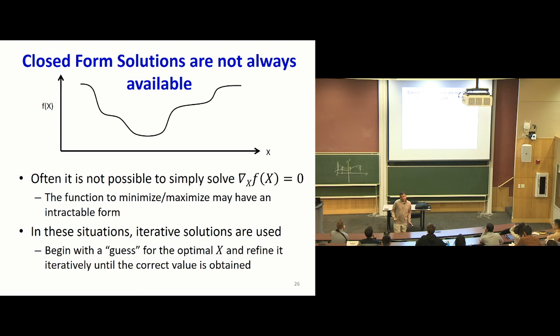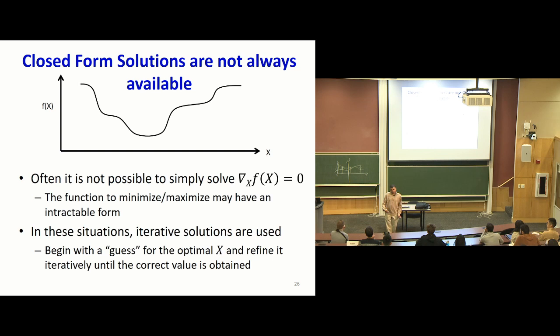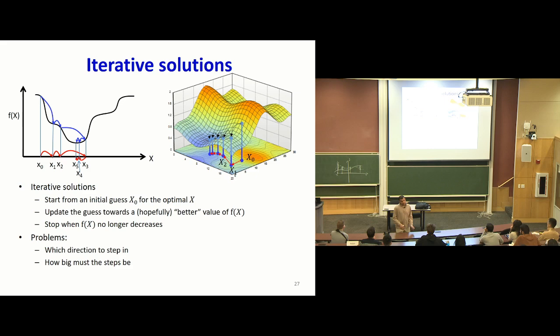So when you can't actually solve for the derivative to be zero, you will use iterative solutions. You start at some point and say this is my first guess — I think this is where the function is a minimum. When you look at the function, it's not a minimum. So you look around: the function is decreasing in that direction — I'm going to walk in that direction. You take a step in the direction in which the function is decreasing. Still not a minimum — repeat the process. Keep doing it till you actually arrive at a minimum.